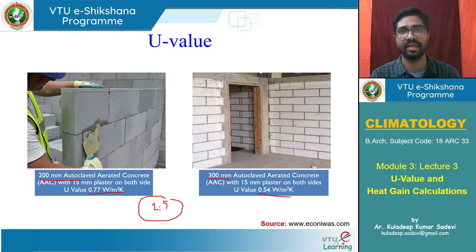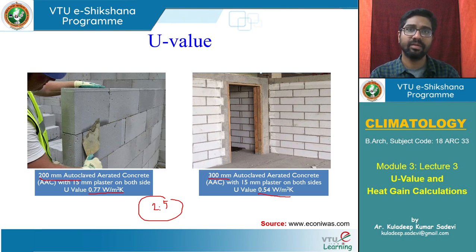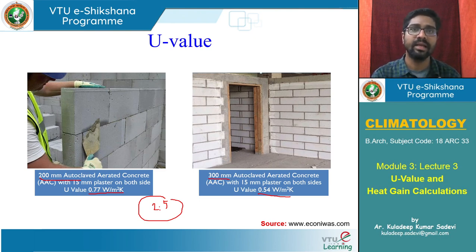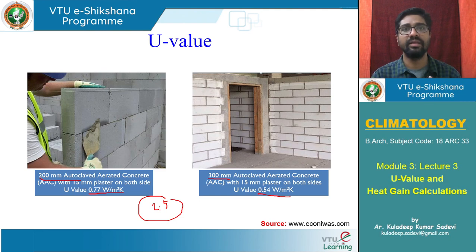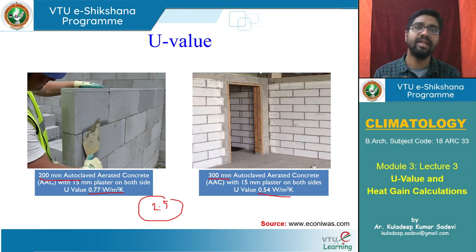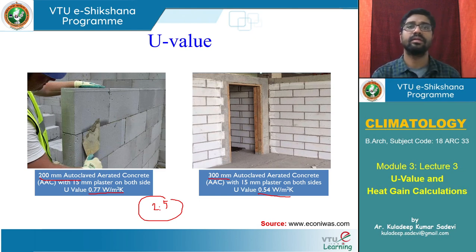By choosing a 300 mm AAC block wall instead of a 9-inch brick wall, about 2 watts of heat rate is cut down — for each second, 2 joules of heat is not going inside. By choosing the right material, you can decide how much heat you allow inside. A 300 mm AAC block wall has only about 0.5 W/m²·K, which is about 5 times less heat going inside compared to a brick wall.